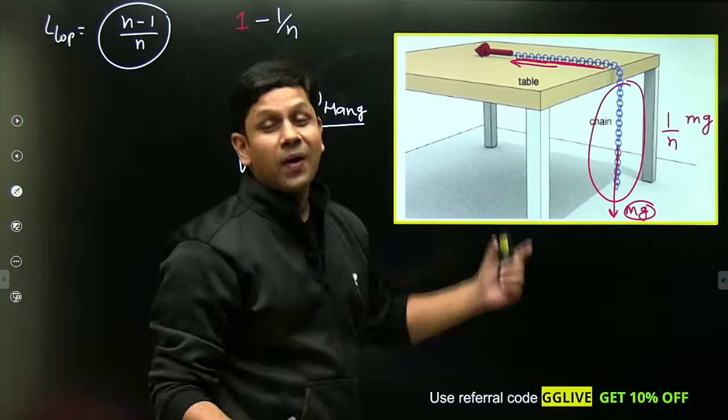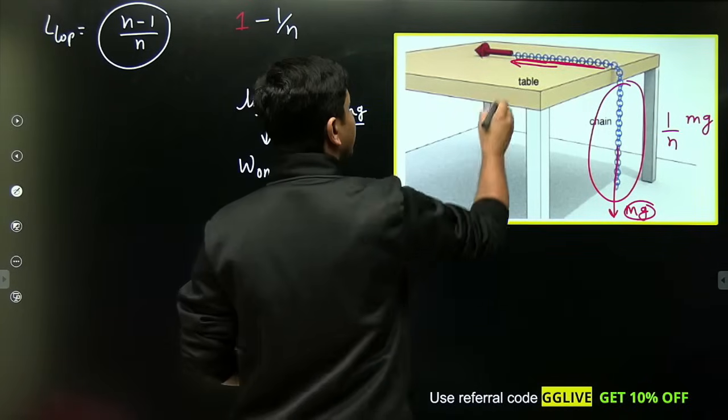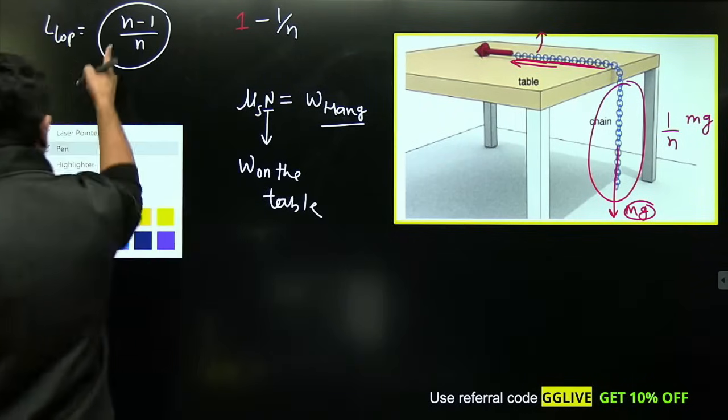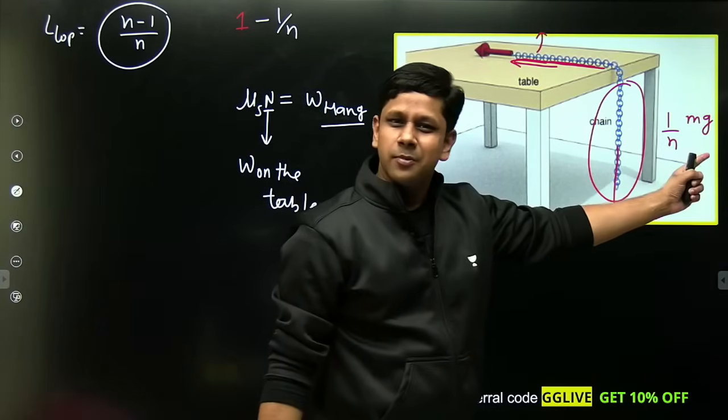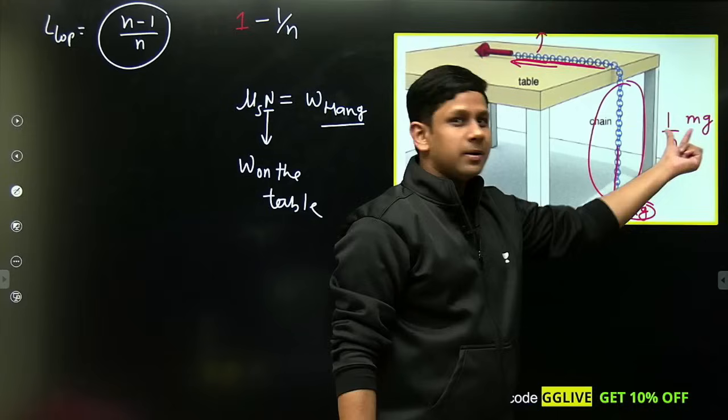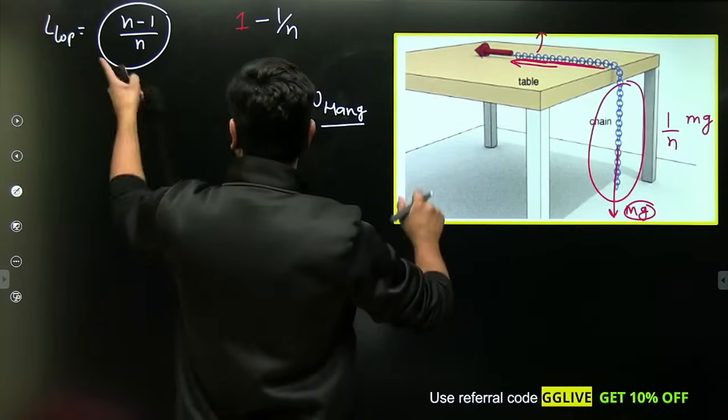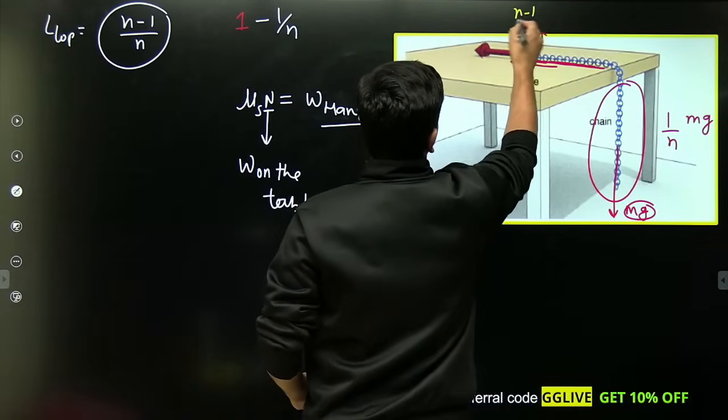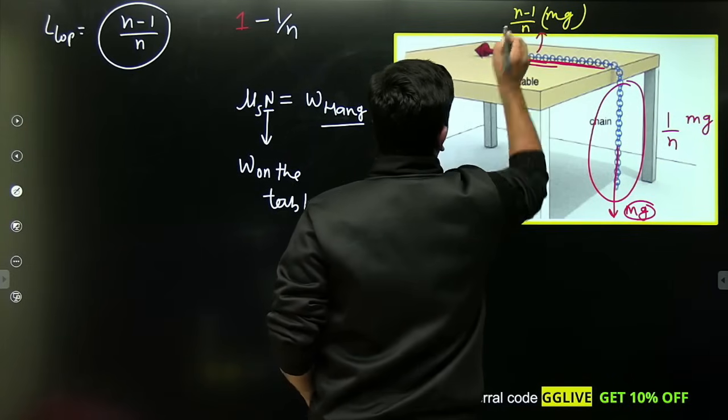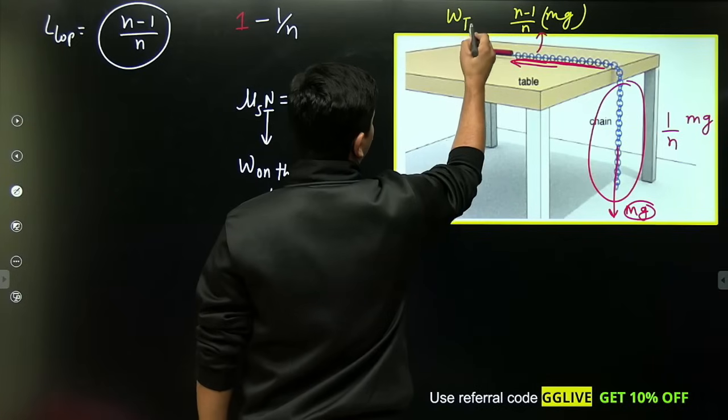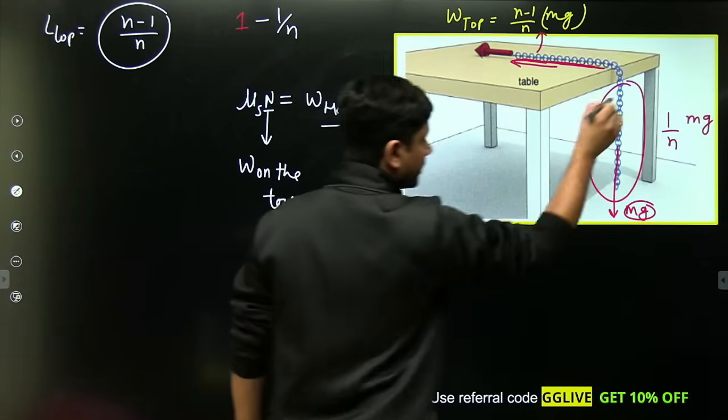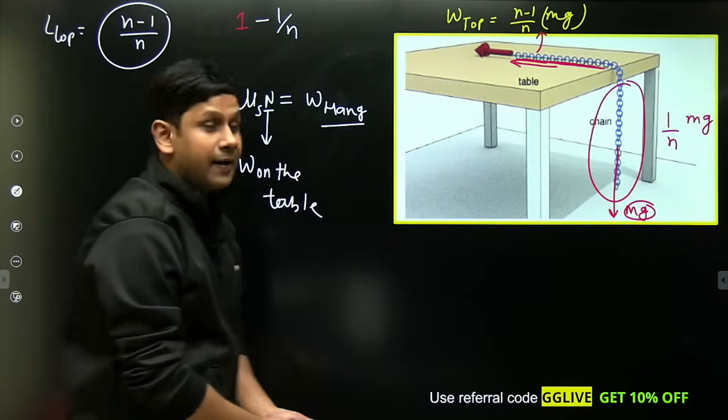So what will be the weight on top of the table? Weight on top will be this fraction multiplied by mg, same logic. Fraction of length is (n-1)/n, so weight is (n-1)/n × mg. So you've calculated how much weight is on top of the table and how much weight is hanging.